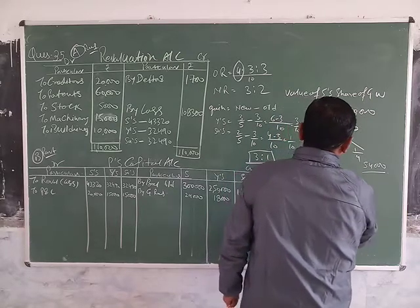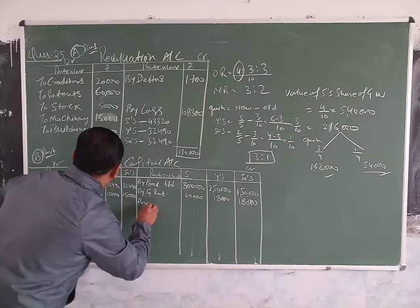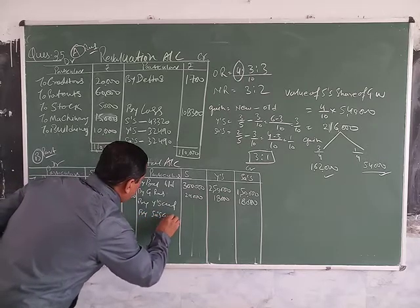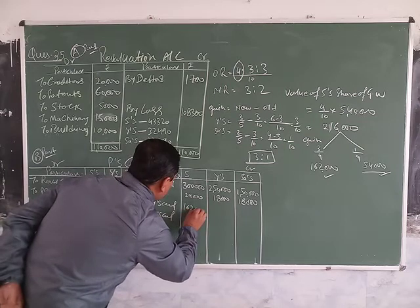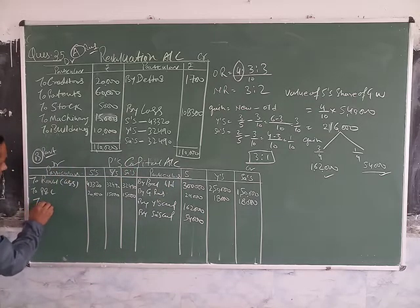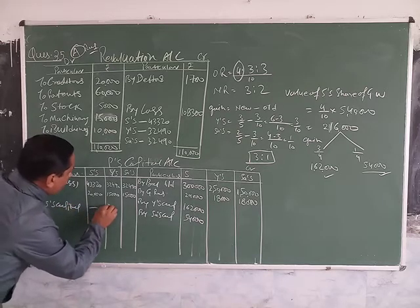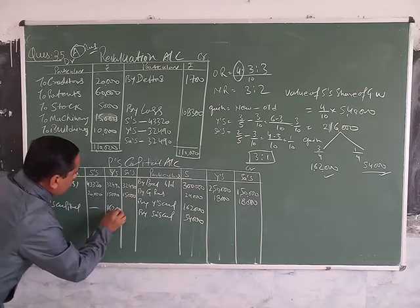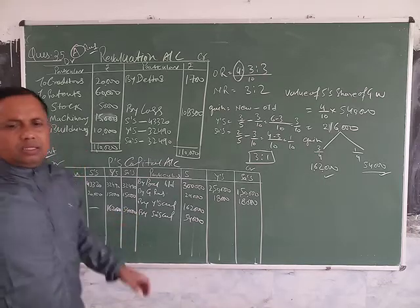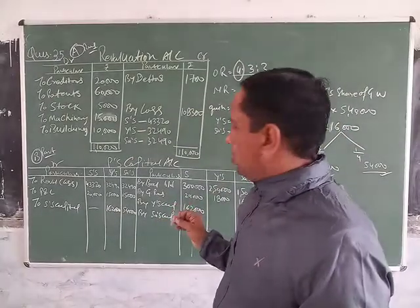This is transferred to the partner's capital accounts: Y's capital and S's capital. This is 1 lakh 62,000 and 54,000. This is the total distribution of the items in this question.